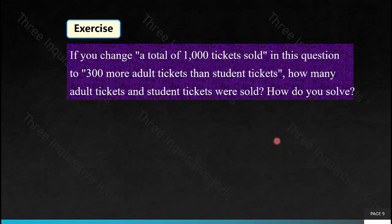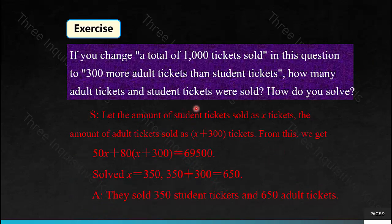If you change the condition from '1,000 tickets sold' to '300 more adult tickets than student tickets,' how many adult tickets and student tickets were sold? We first set the amount of student tickets sold as X tickets and the amount of adult tickets sold as X plus 300 tickets. So, 50X plus 80(X plus 300) equals 69,500. Solved, X equals 350. Adding the 300, our answer is 350 student tickets and 650 adult tickets were sold.